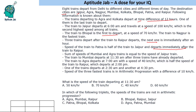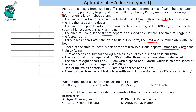Let us formulate a table. There are eight trains, numbered one through eight. We will have columns for time, city, and speed. Now let us look for clues that tell us the order — the sequence in which the trains depart.